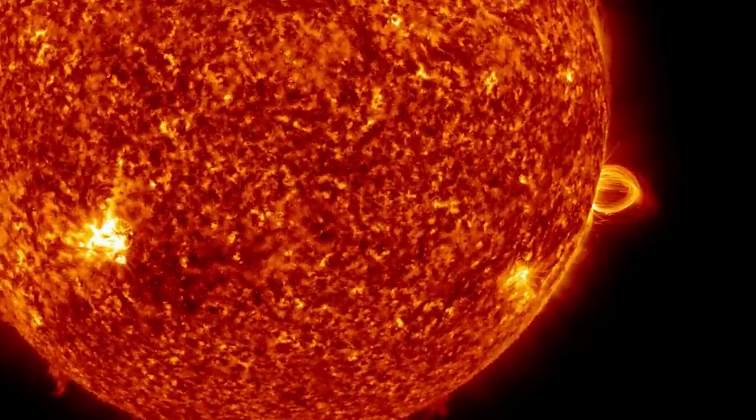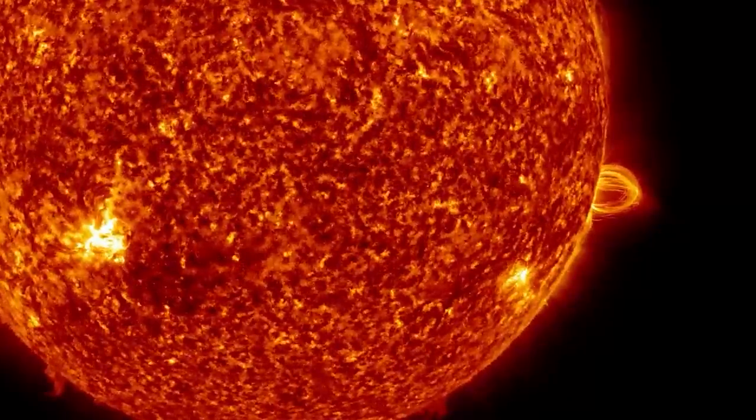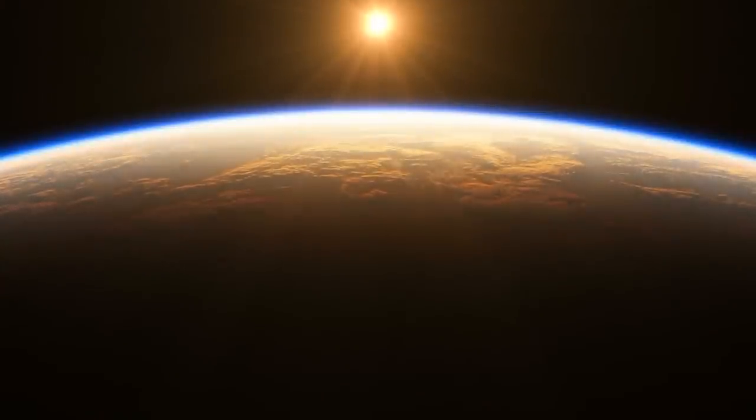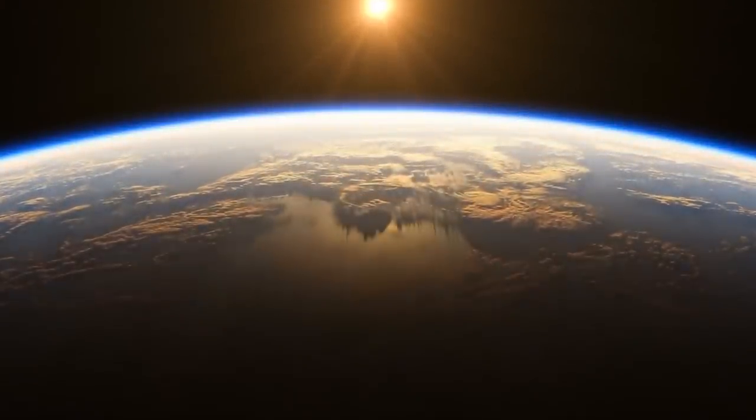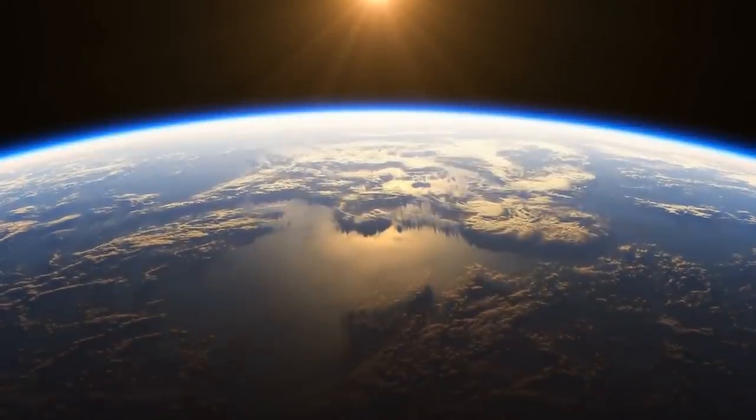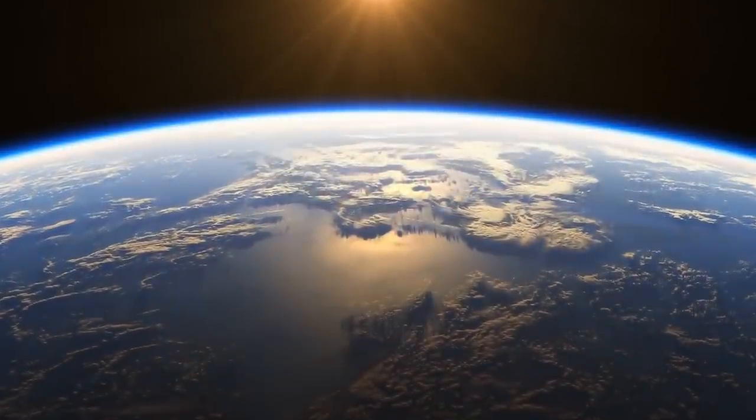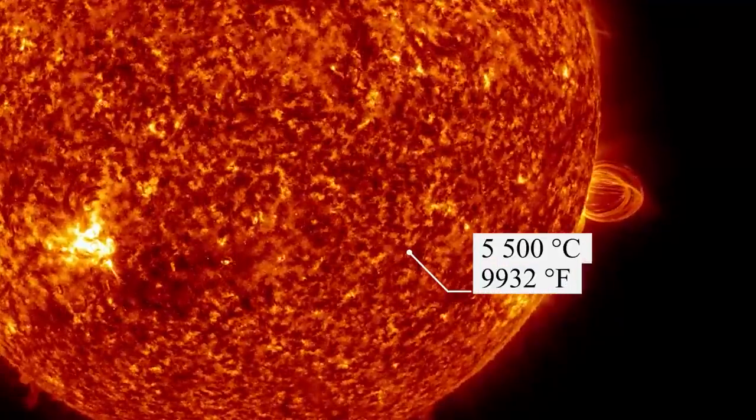The Sun alone represents 99.8% of the mass of the solar system. Its size corresponds to 110 times that of the Earth. Its distance from the Earth of 150 million kilometers, or 93 million miles, protects us from its heat.